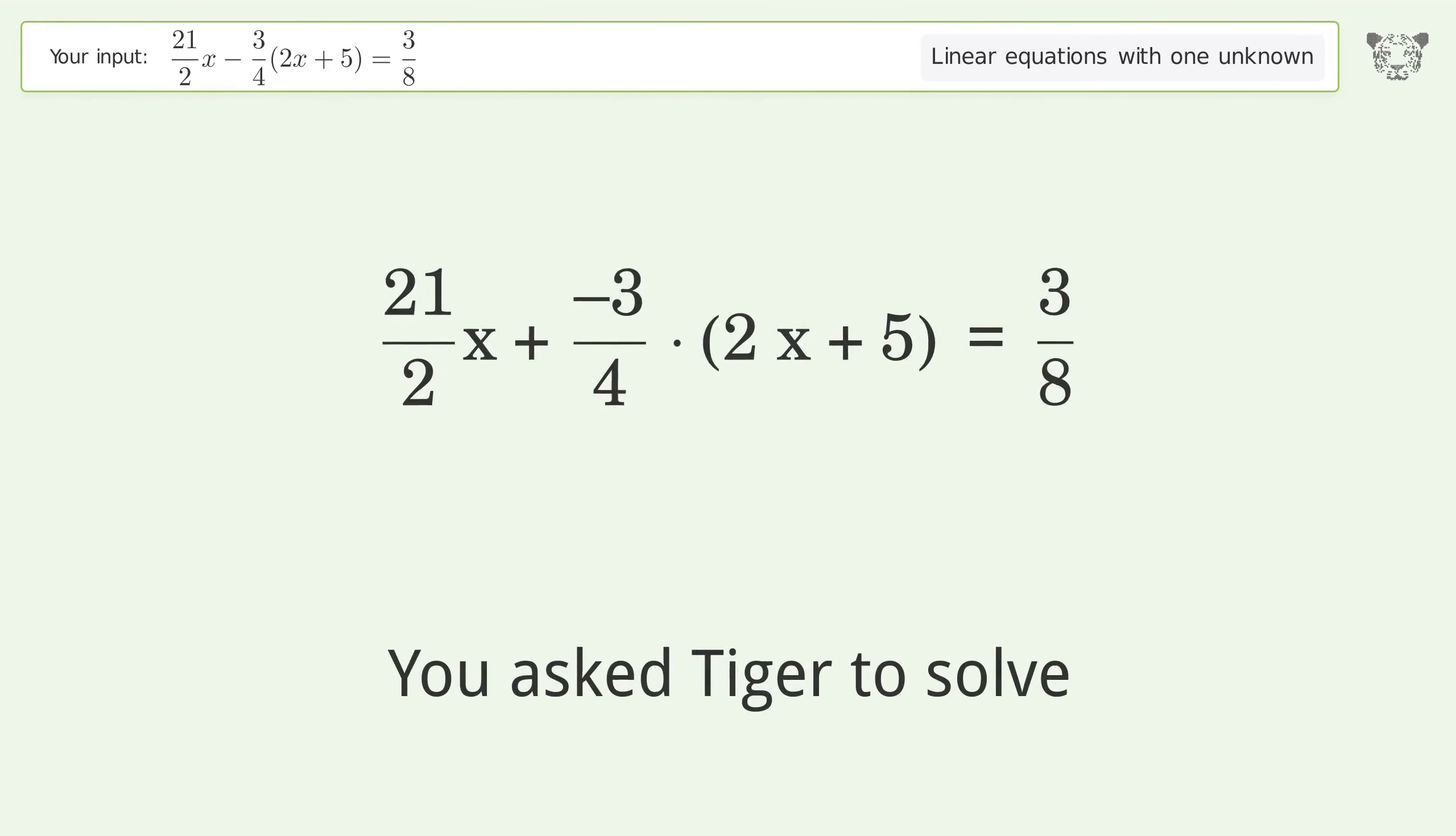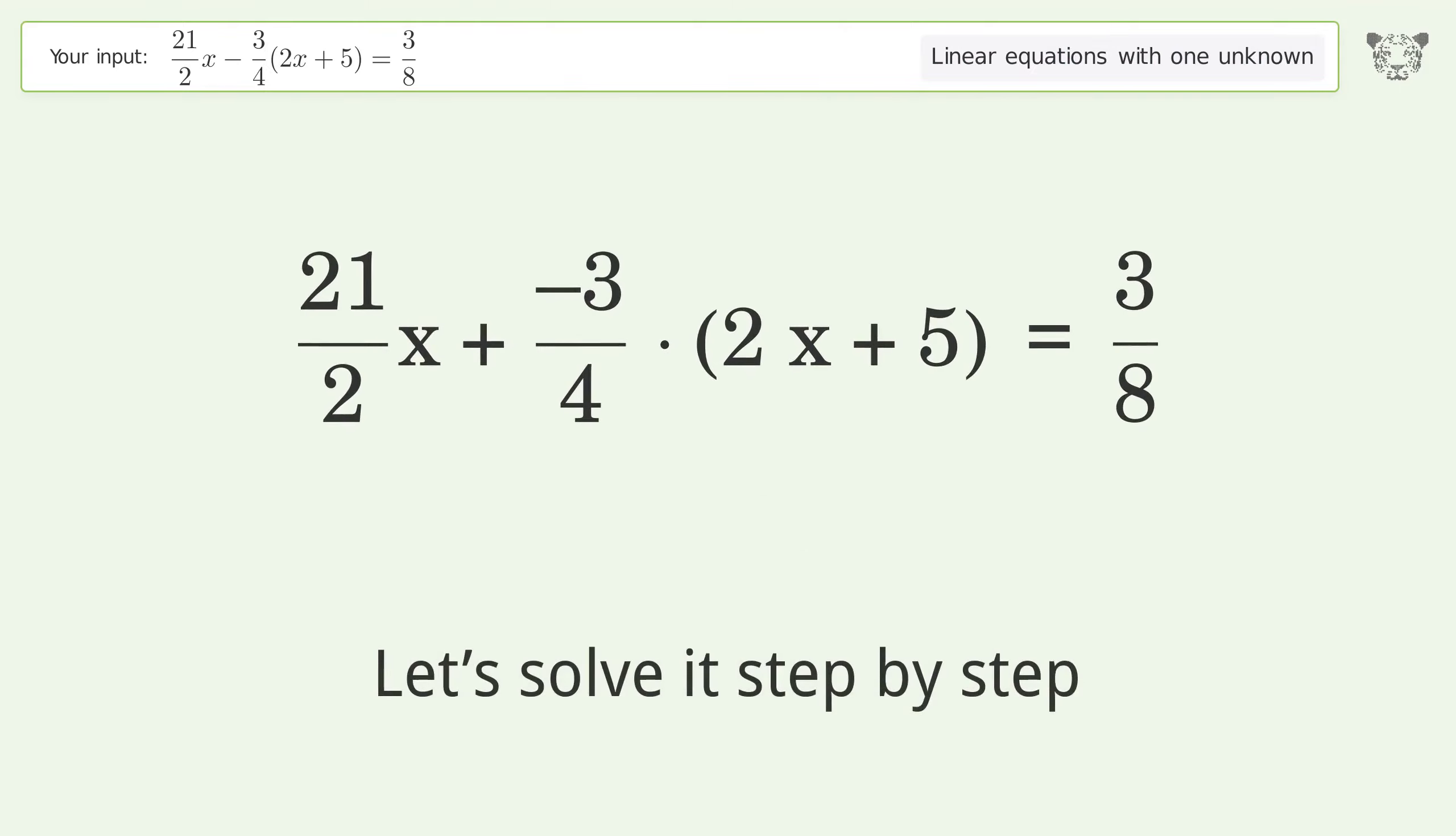You asked Tiger to solve this problem dealing with linear equations with one unknown. The final result is x equals 11 over 24. Let's solve it step by step.